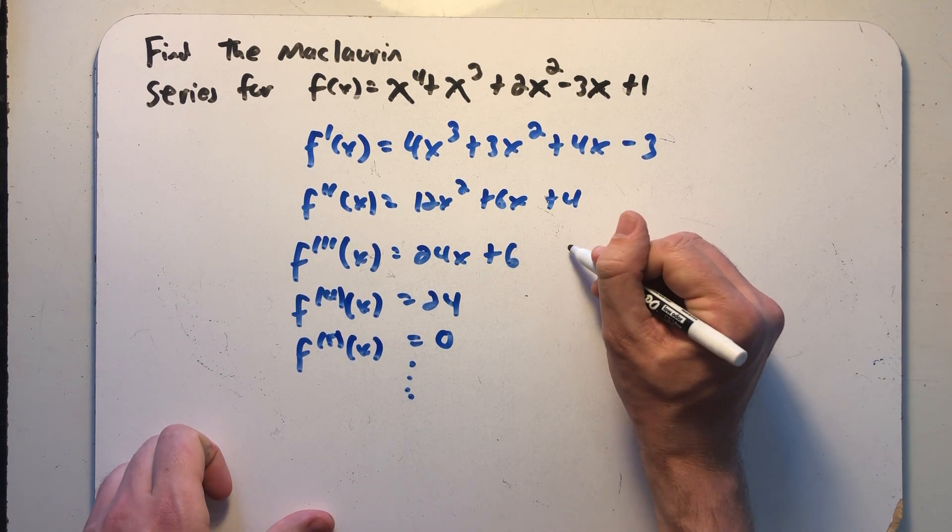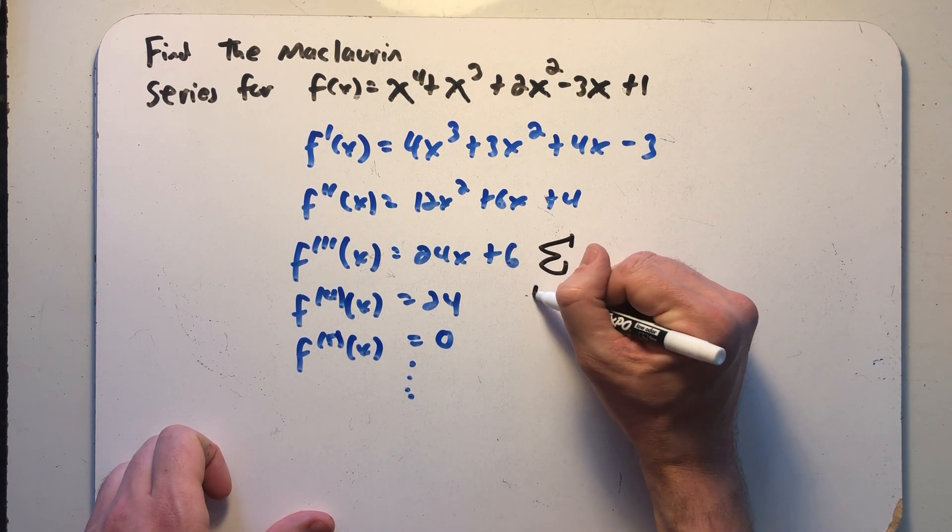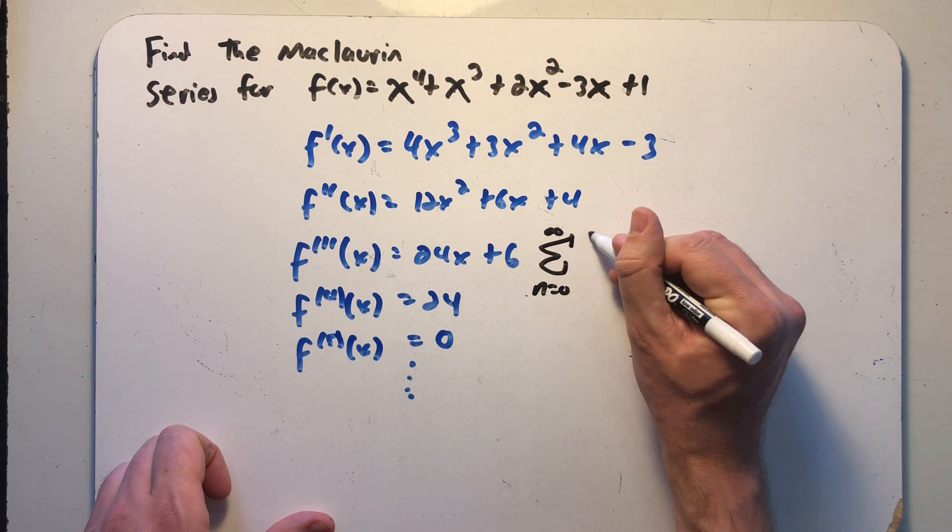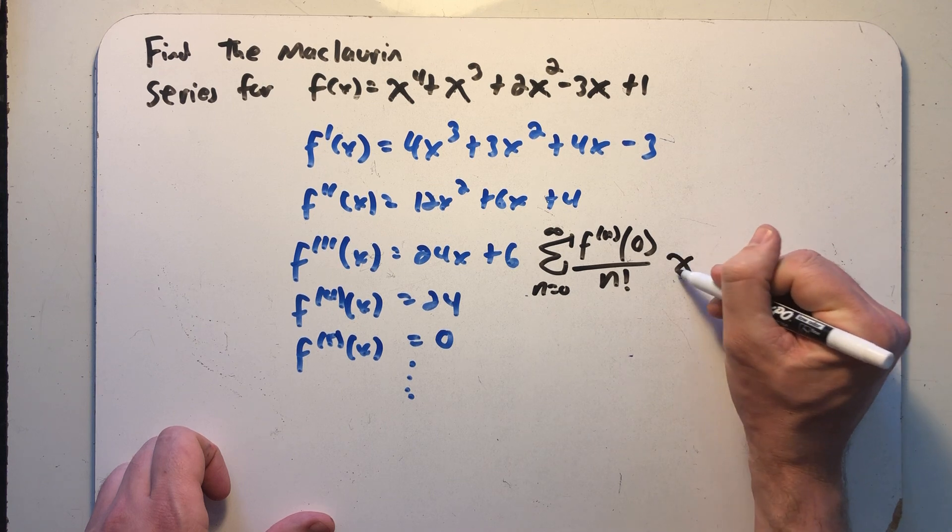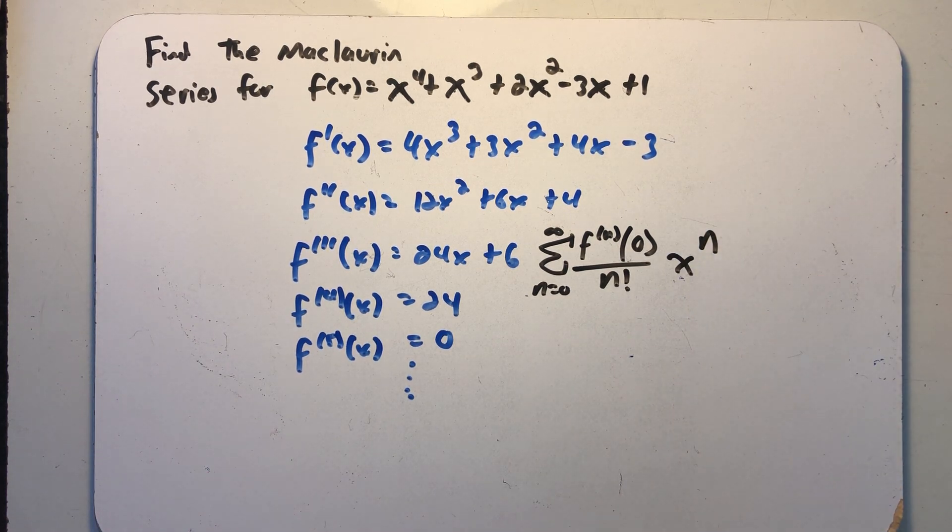So let's think about our definition of a Maclaurin series. We take all of those derivatives, we plug in zero, we divide by n factorial times x to the n. So let's use these derivatives to write out the first so many terms.